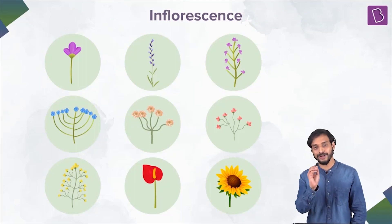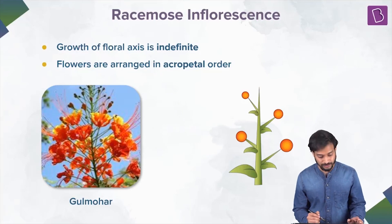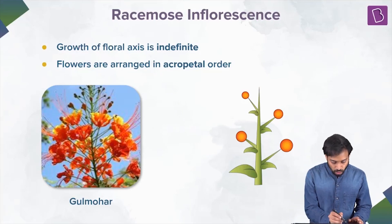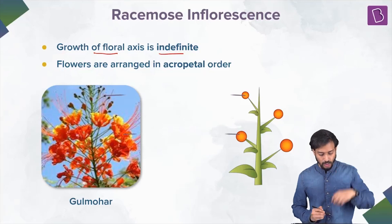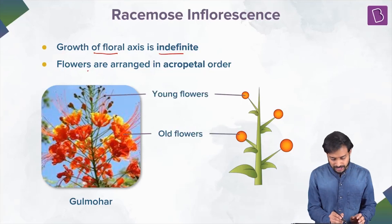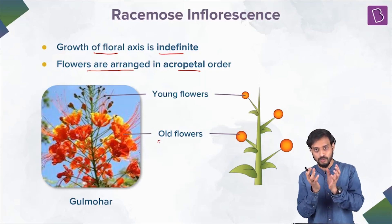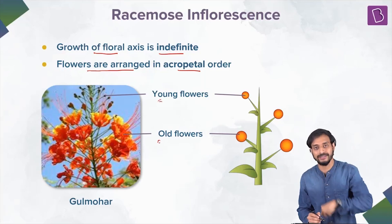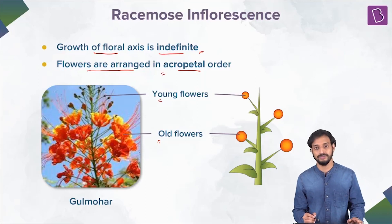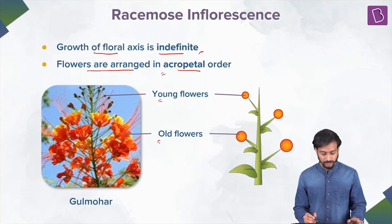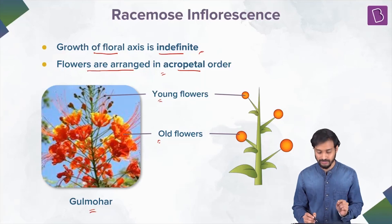Let's talk about some important types. First is the racemose inflorescence. Here the growth of the floral axis is indefinite — it keeps on growing. The flowers are arranged in acropetal order, meaning older flowers are at the base and younger flowers come up at the tip or apex. An important example is Gulmohar.